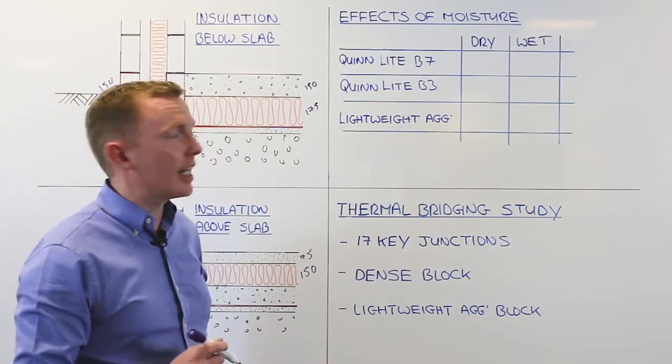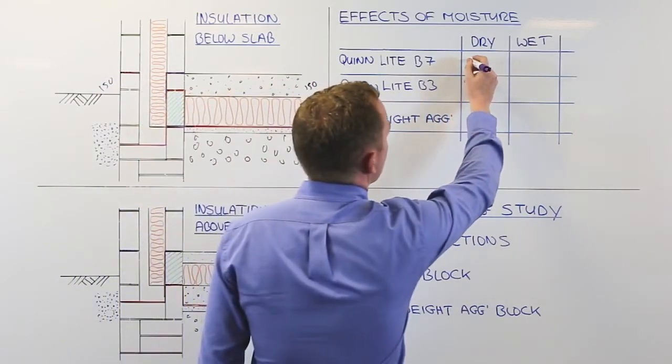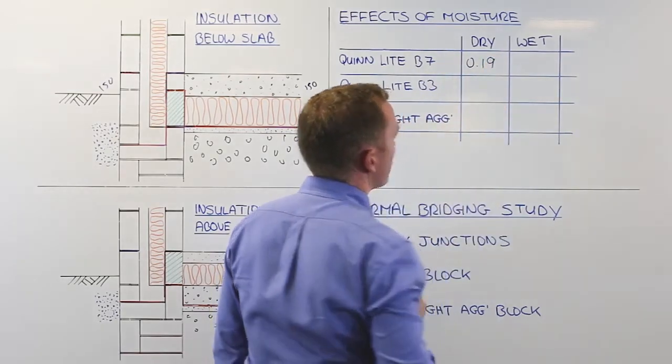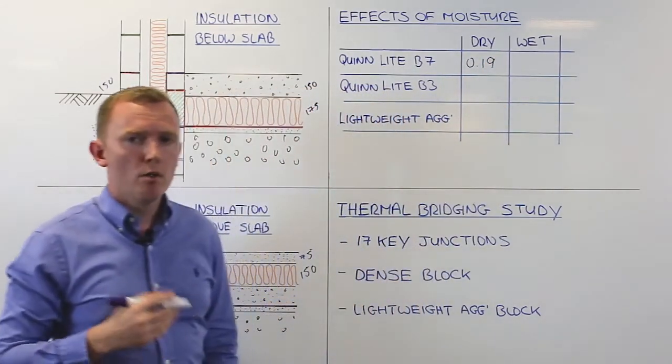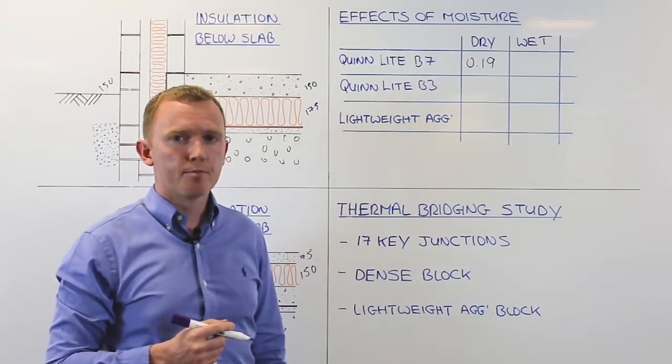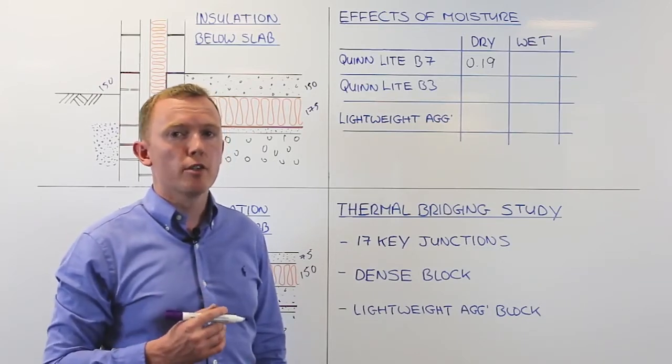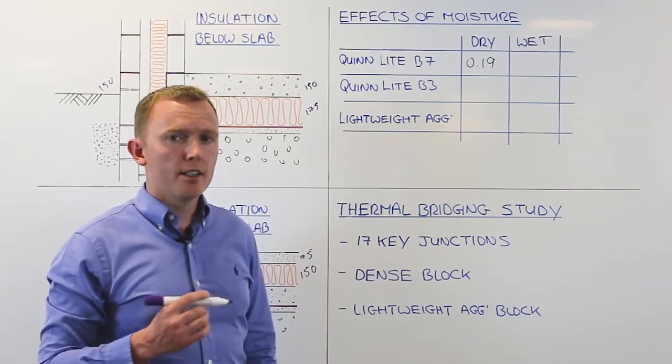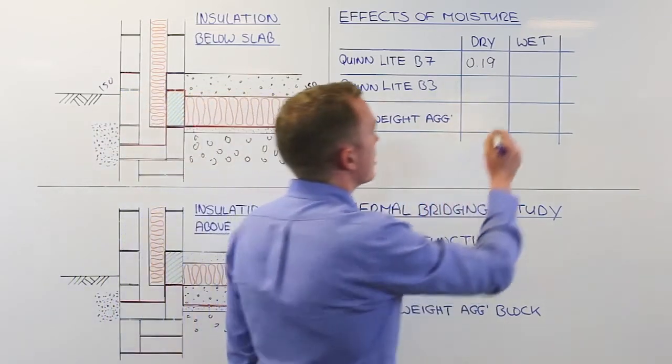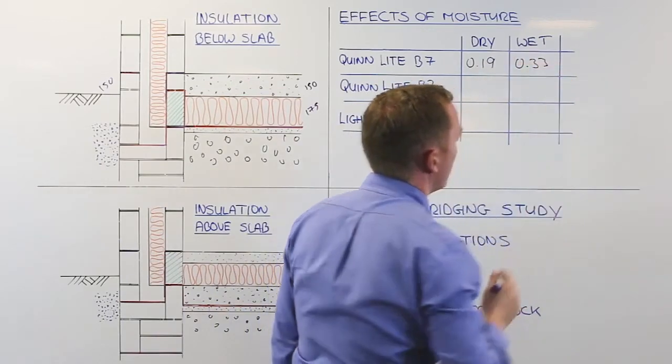So if we look at our typical quinolite B7 block, the thermal performance of that block in its dry state is 0.19 watts per meter Kelvin. What we have done with that block then, we submerged that block in water for 48 hours, then took the block out of the water and tested it straight away. So the block was at full saturation. And the test result revealed that the thermal conductivity of that block at full saturation was 0.33 watts per meter Kelvin.